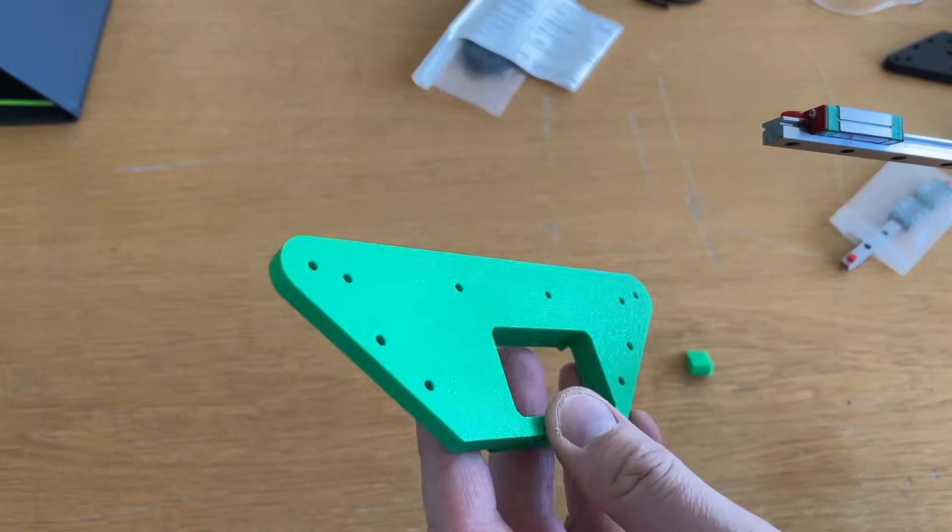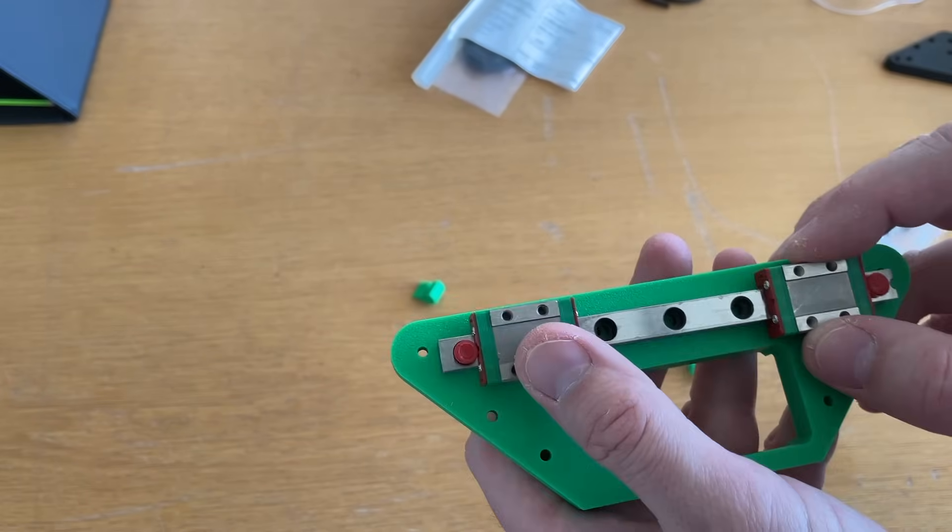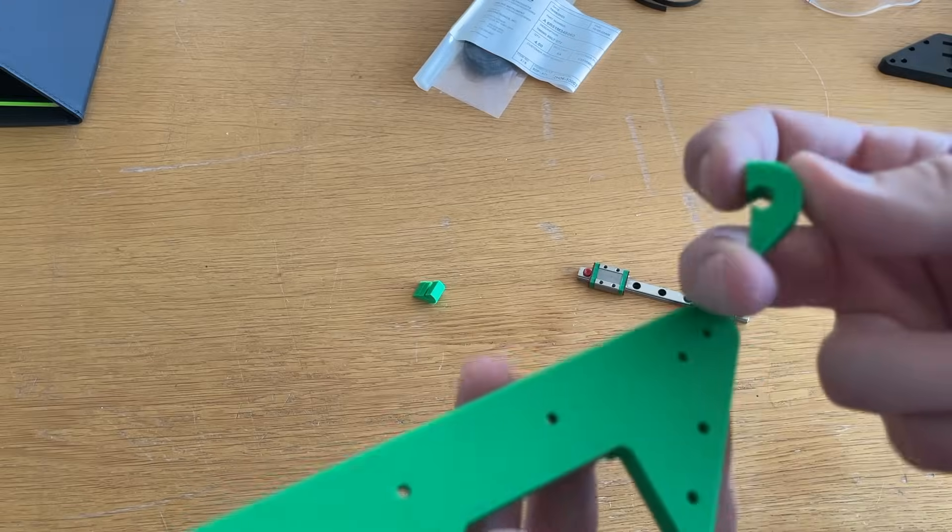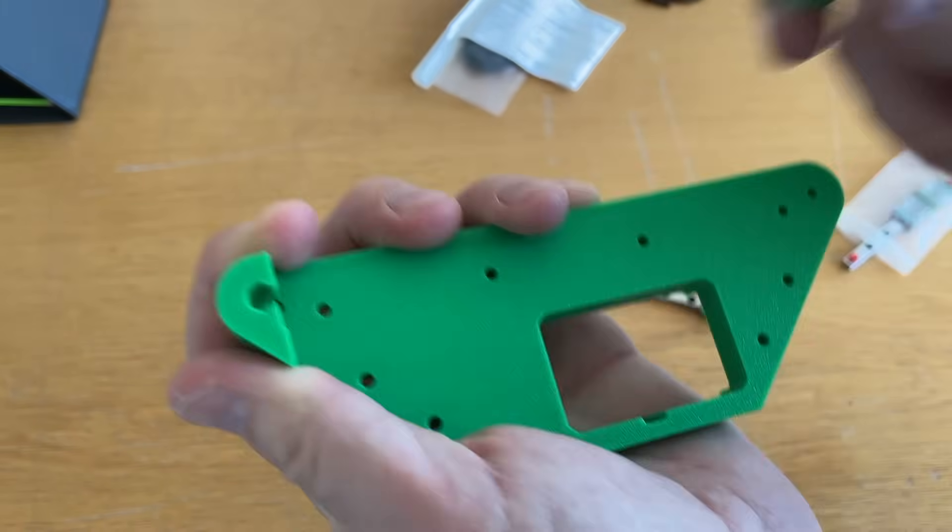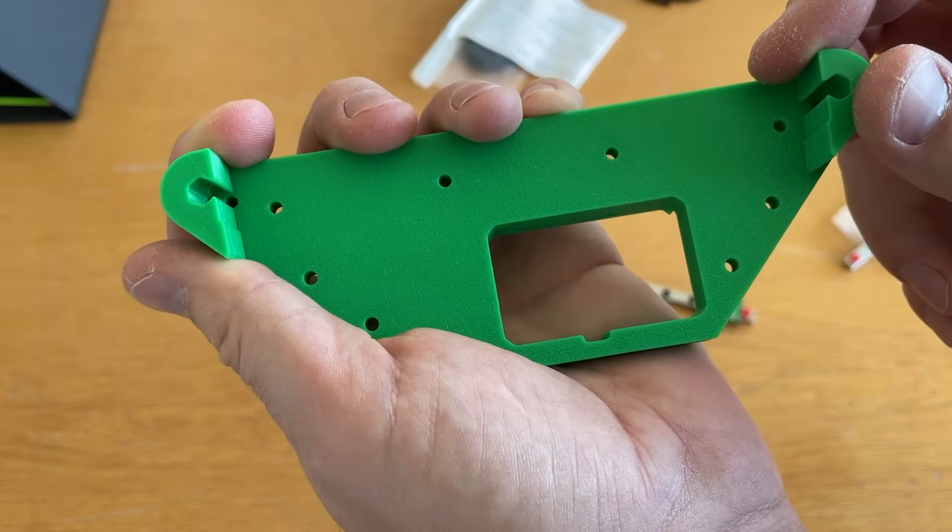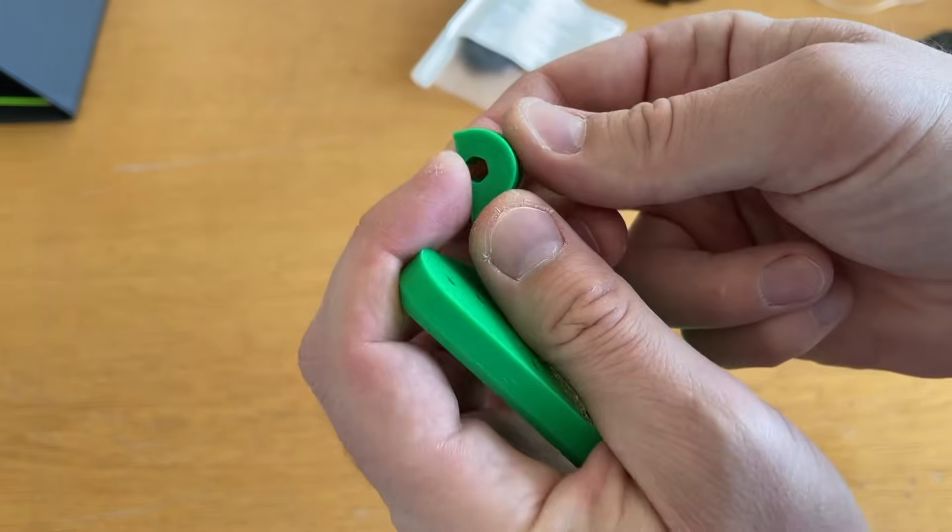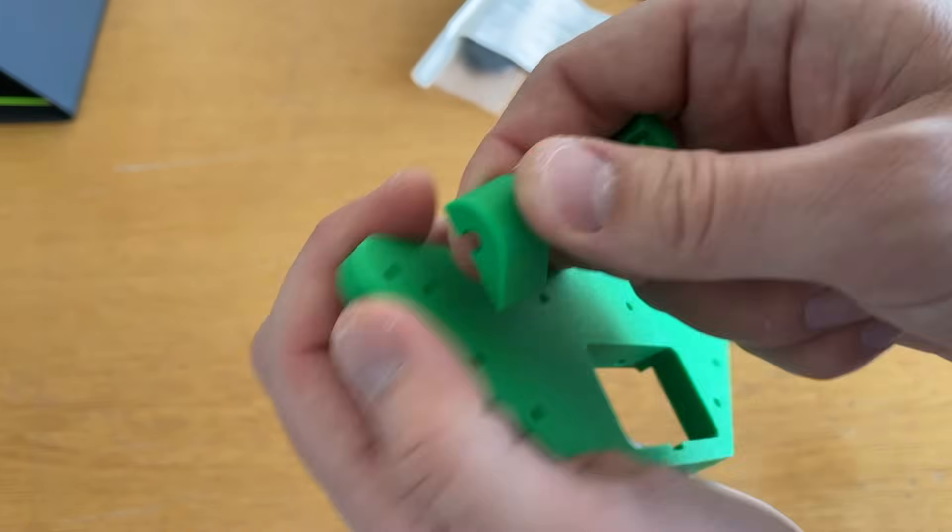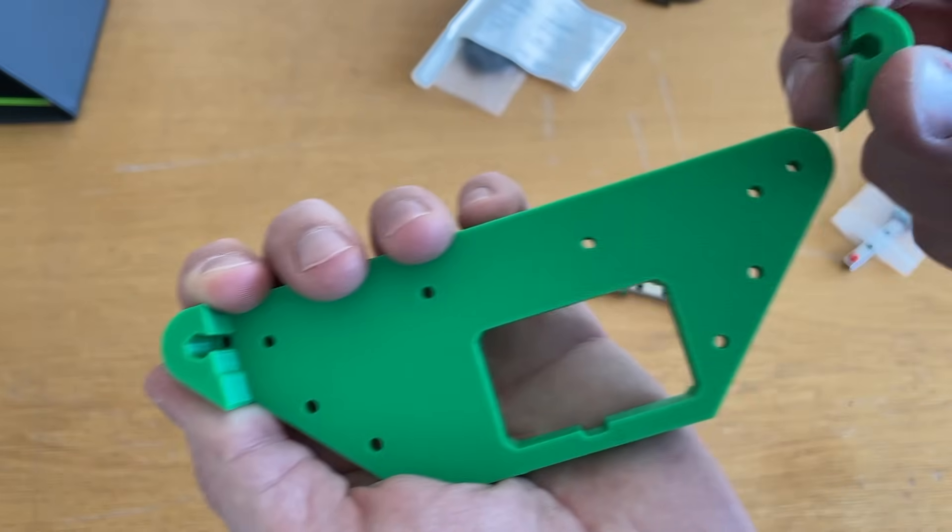This is probably the main part. It's going to hold the servo and also the rail, and to this part I need to glue these small parts. One goes on this side and the second one goes on this side. I usually don't like to use the glue but here I would use it because first of all it's light and second these pieces are more aesthetic pieces than functional ones so there is no really forces on these pieces.